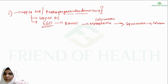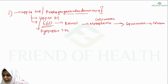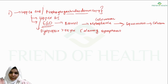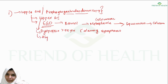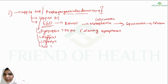Upper GI endoscopy is indicated in a person with dyspepsia who is more than 55 years of age with alarming symptoms. Alarming symptoms include weight loss, hematemesis, or progressive dysphagia along with dyspepsia features. Atypical chest pain and progressive dysphagia are also indications for EGD.